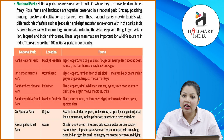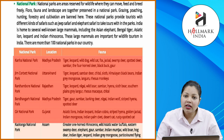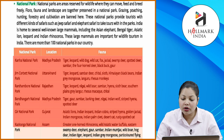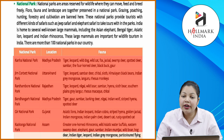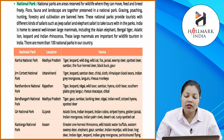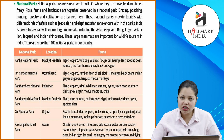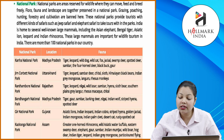Gir National Park, Gujarat — Asiatic lions, Indian leopard, Indian cobra, striped hyena, golden jackal, Indian mongoose. Kaziranga National Park, Assam — greater one-horned rhinoceros, wild Asiatic water buffalo, eastern swamp deer, elephant, gaur, sambar, Indian muntjac, wild boar, Indian tiger, leopard, Indian grey mongoose. Bandipur National Park, Karnataka — tiger, Indian elephant, gaur, sloth bear, mugger, Indian rock python, four-horned antelope, jackal, dhole, cheetah, Indian giant squirrel. Sundarbans National Park, West Bengal — Bengal tiger, leopard, macaque, wild boar, saltwater crocodile, Olive Ridley turtle, Ganges river dolphin, hawksbill turtle.